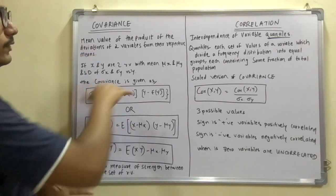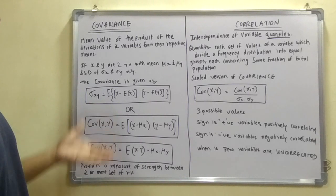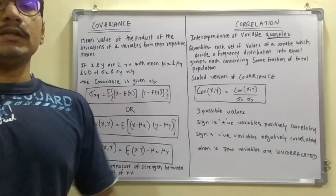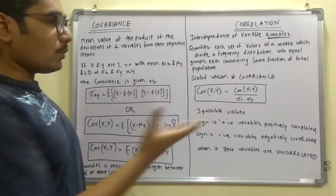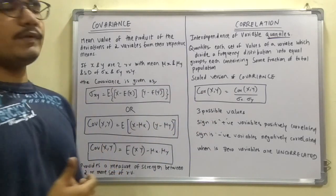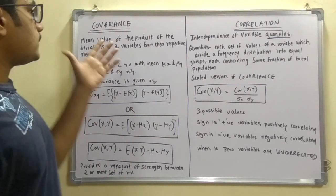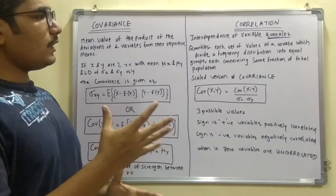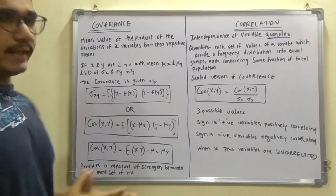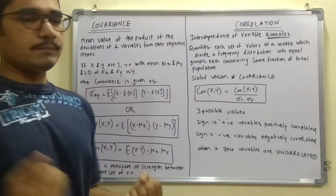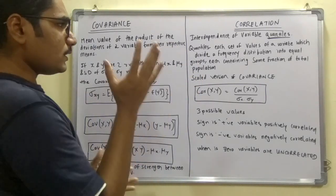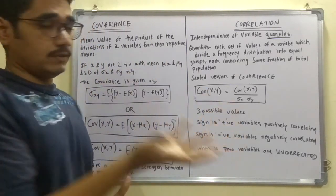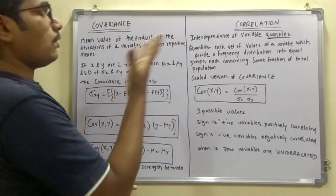Moving on to correlation — it is defined as the interdependence of variable quantiles. Correlation can be considered a scaled version of covariance: if there is strength between two variables, there is much more correlation.